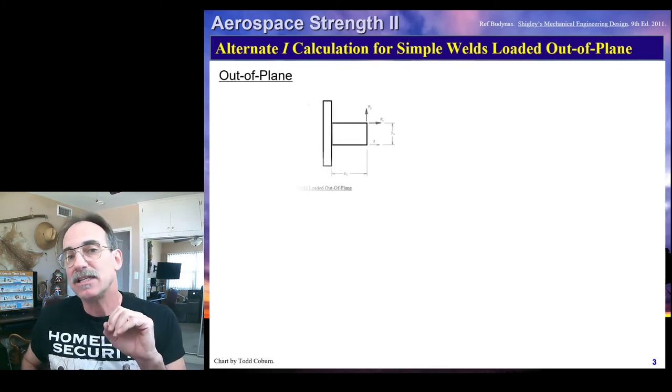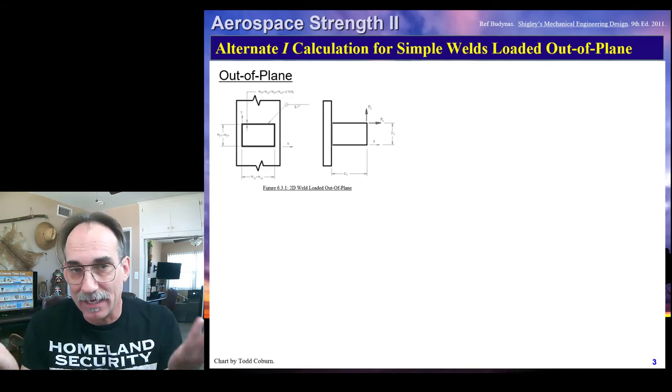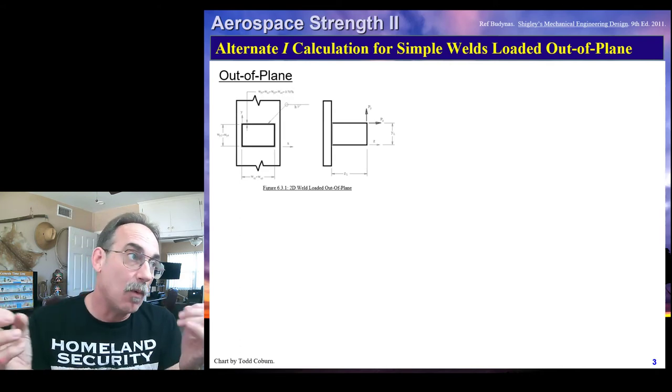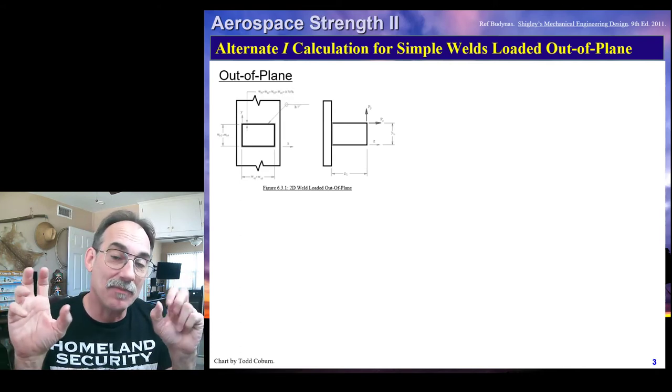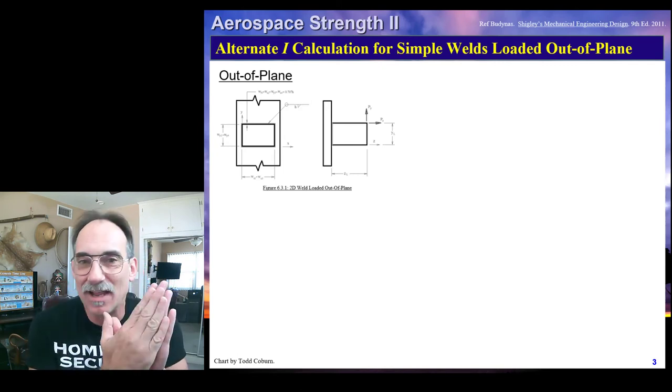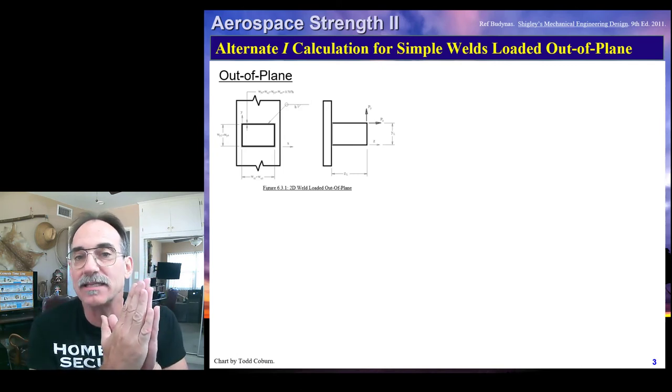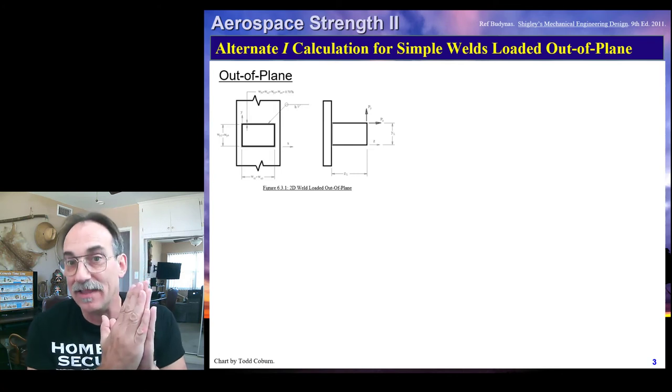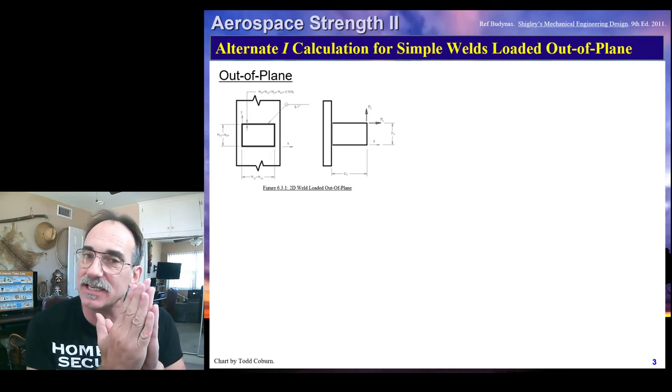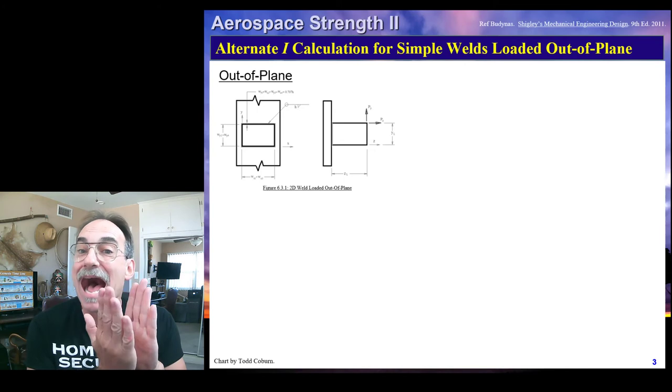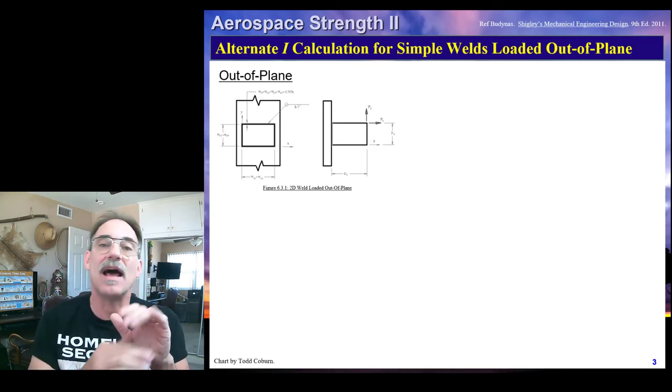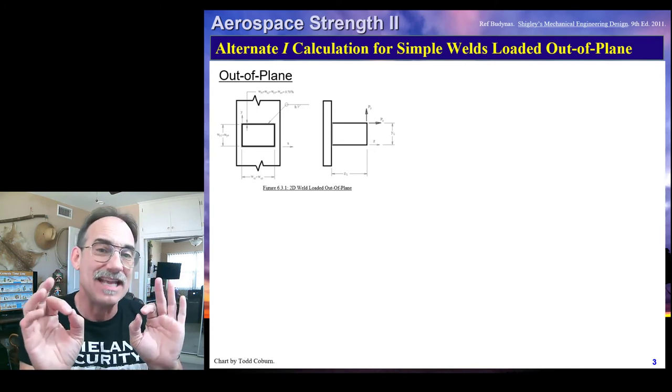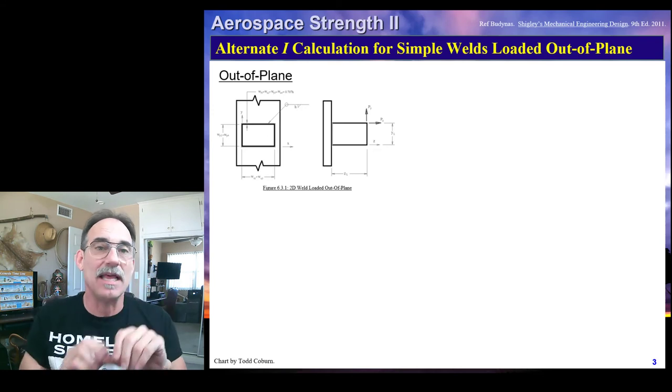So, next we talked about out-of-plane loads. Out-of-plane welds can be classified as out-of-plane when any of the components of stress are oriented out of the plane. In that case, the resistance to torsion will be the I, or the moment of inertia of that weld pattern. It's actually the same as the J in another plane.